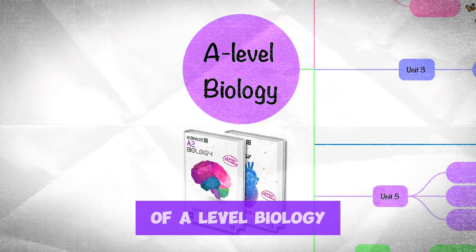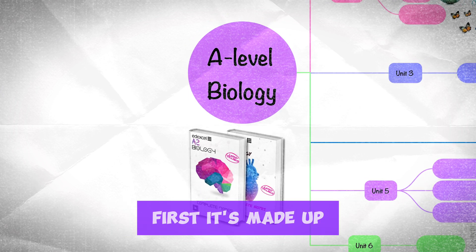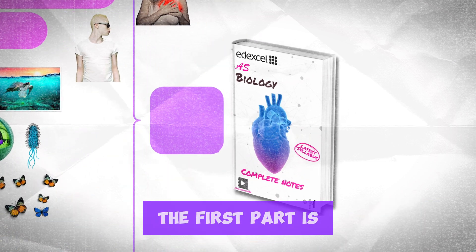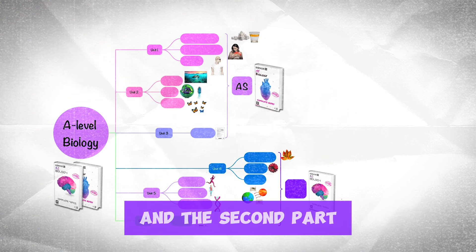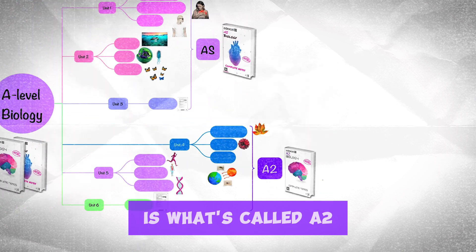Here's a quick overview of A-level biology. First, it's made up of two parts. The first part is called the AS and the second part is what's called A2 biology.